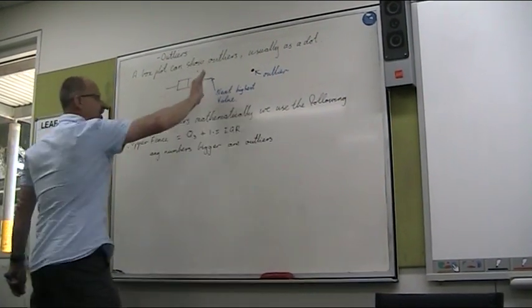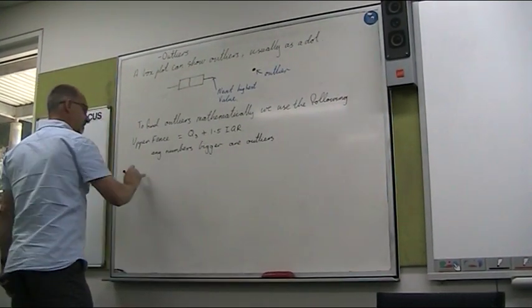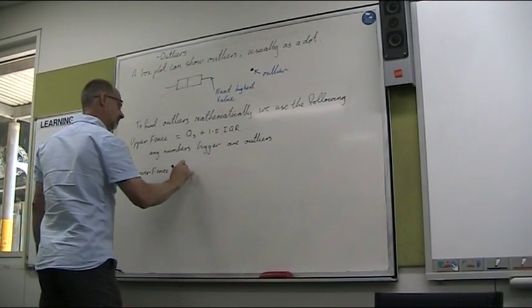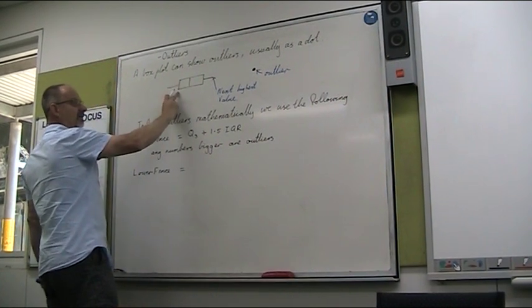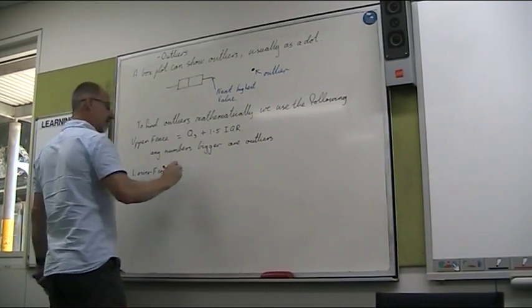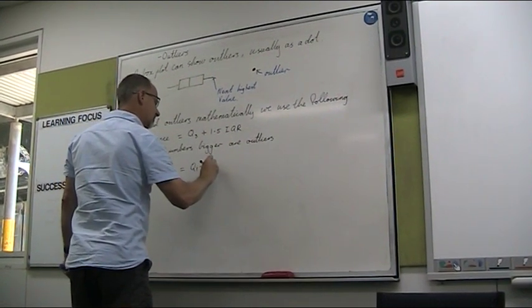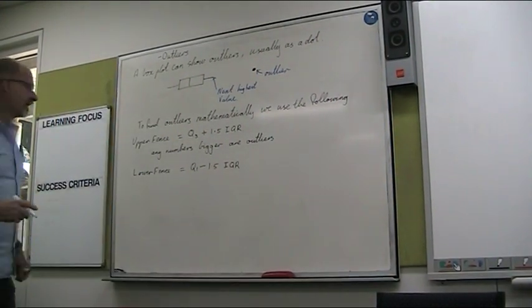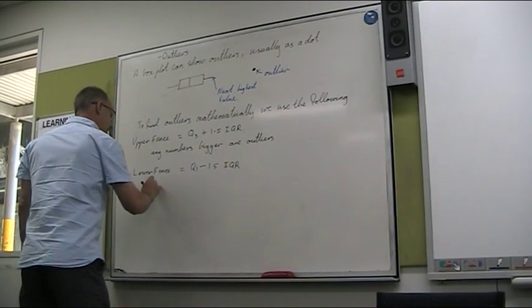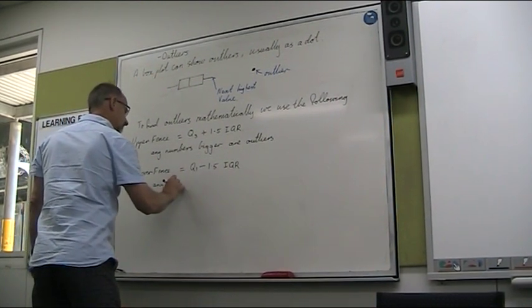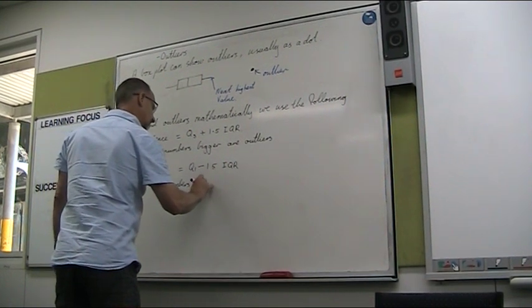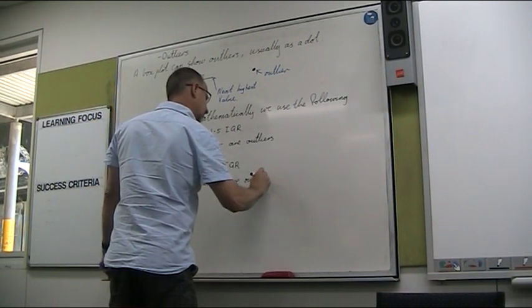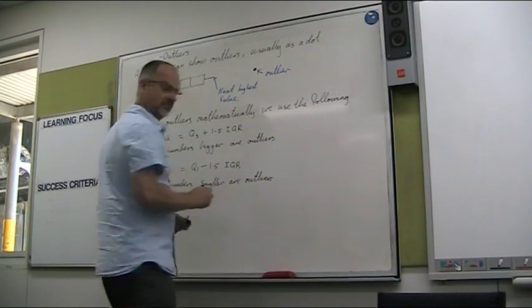And the other end, so that's up this end. Down the other end, that's what's called the lower fence. Because we're coming down from that lower quartile Q1 down that way, it's Q1 minus 1.5 times the interquartile range. And then any numbers smaller are outliers.